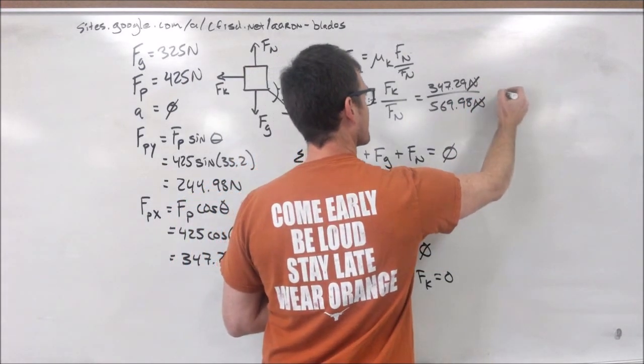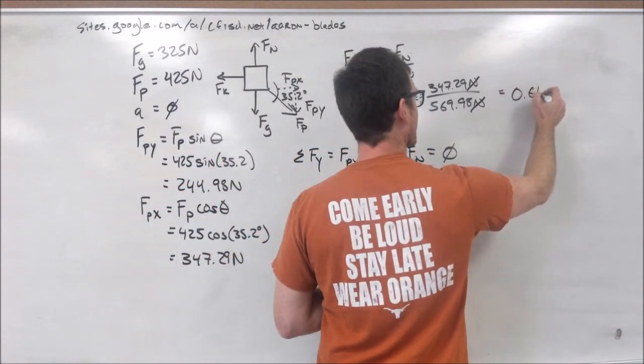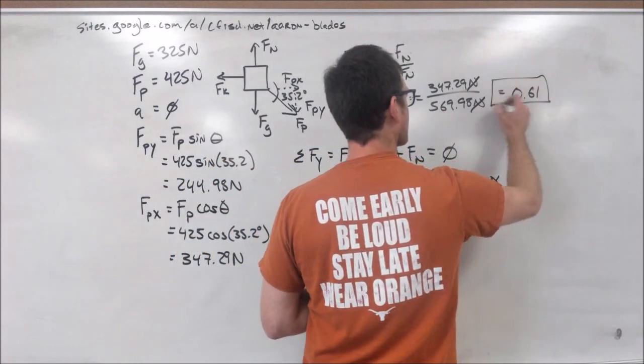The newtons cancel out and we end up with a dimensionless coefficient, mu k is equal to .61.